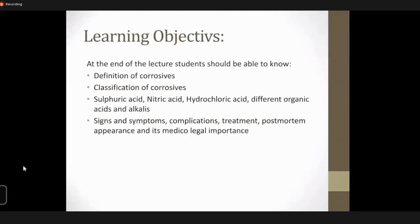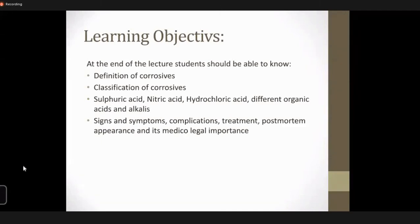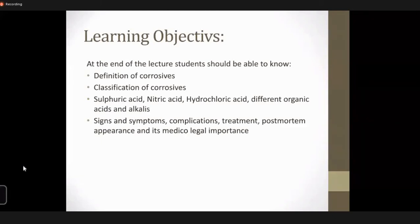Moving on — what do you mean by corrosives? Corrosives can be defined as those substances which corrode. The literal meaning of corrode is to eat away, or you can say it destroys and causes destruction or dissolution of the tissues they come in contact with through a direct chemical action. Their action is mainly a local one, acting on the tissues of the alimentary track and to some extent on the respiratory track. As a general rule, there is no remote systemic action with the exception of shock.